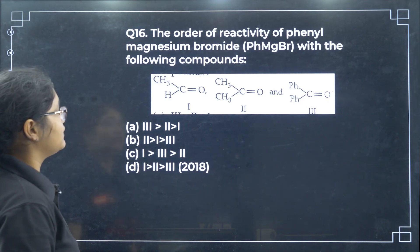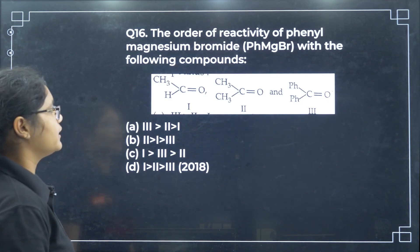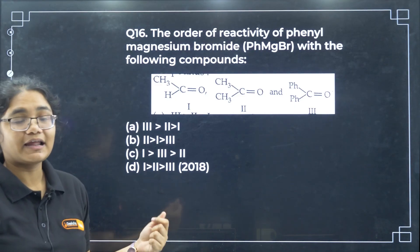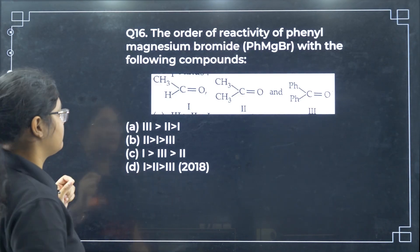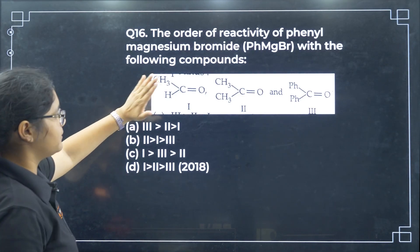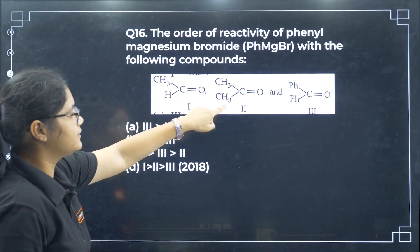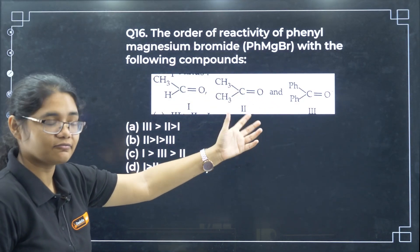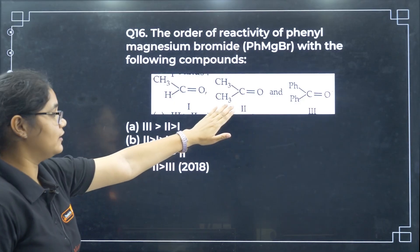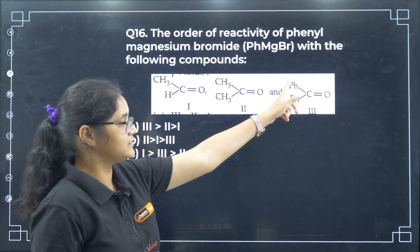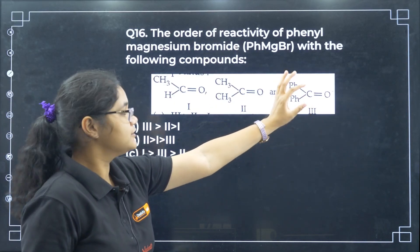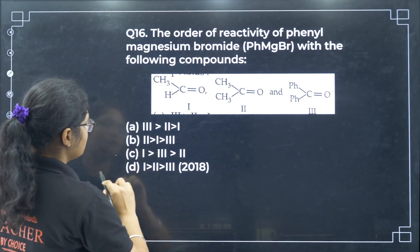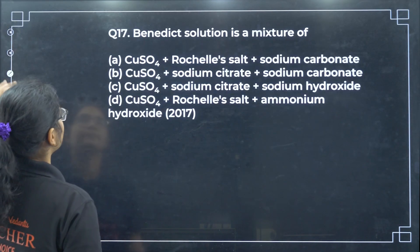Order of reactivity of phenyl magnesium bromide with the given compounds: aldehydes are more reactive than ketones, so compound 1 is most reactive. Among the two ketones, the one which is less sterically hindered is more reactive. Compound 2 has two phenyl groups so it is more sterically hindered. The order of reactivity is 1, 3, 2 — option D.